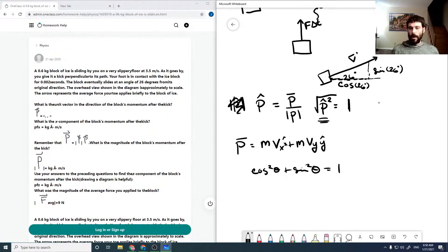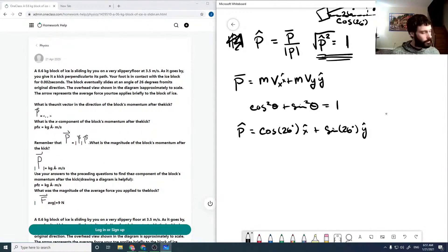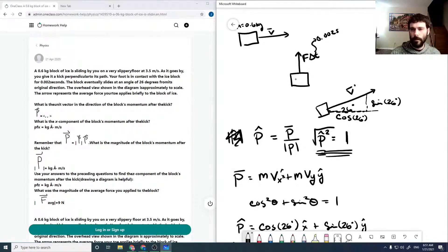And in fact we know that cosine squared theta plus sine squared theta equals one, which satisfies our p condition here. So that means that our p hat vector can really just be expressed as cosine of 26 degrees x hat plus sine of 26 degrees y hat. That gives us our directionality and it's unitless. So our p hat then is just 0.8988 x hat plus 0.4384 y hat.